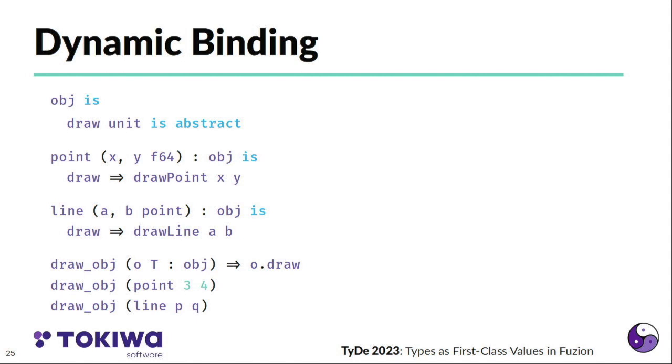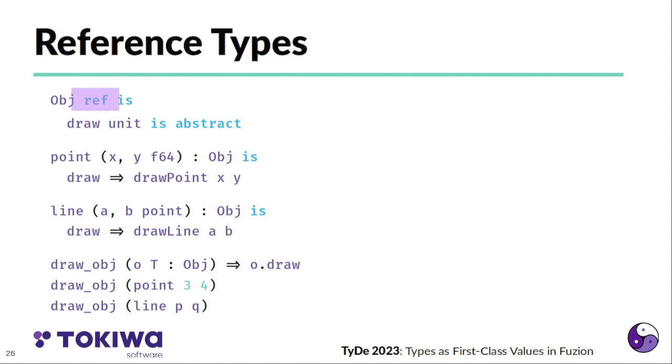Next, dynamic binding is also supported, and for that we need reference types. So we can change our object to be a reference type, which for the parametric type example has no semantic effect at all. The code stays the same, but this now allows us to do something else with that because reference types can be assigned to from any type that inherits from that.